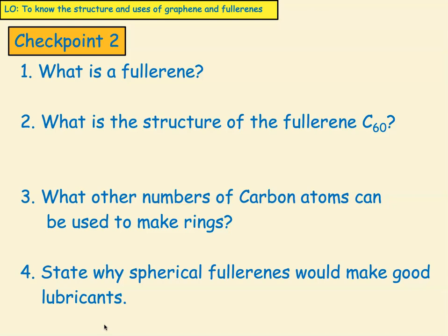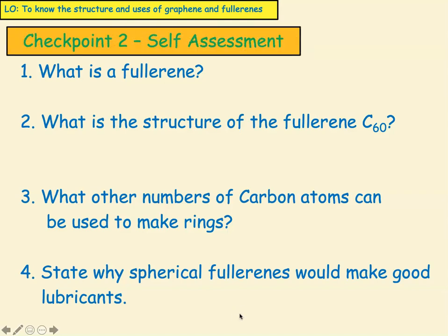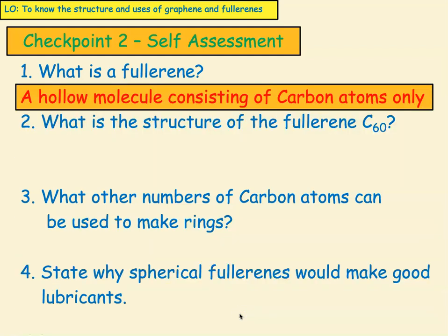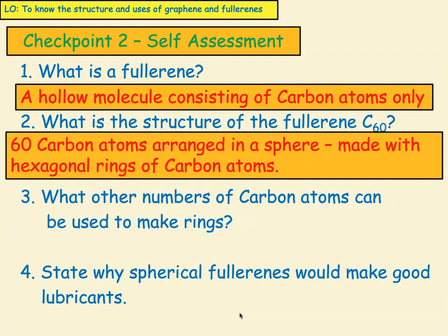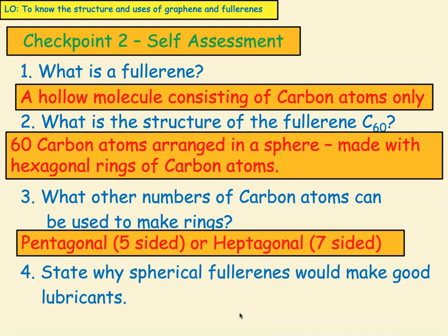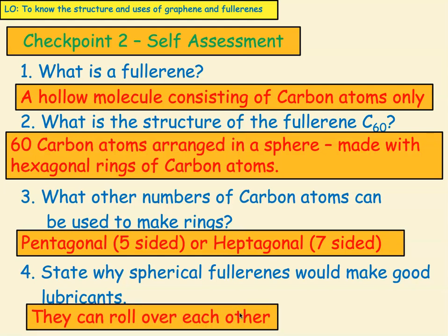Let's have a look at our second checkpoint. Pause the video now and answer the questions, then come back. Let's self-assess. What is a fullerene? A fullerene is a hollow molecule consisting of carbon atoms only. What is the structure of the fullerene C60? That is 60 carbon atoms arranged in a sphere like a ball, made with hexagonal rings of carbon atoms. What other numbers of carbon atoms can be used to make rings? We can use pentagons — five-sided — or heptagons — seven-sided. Why would spherical fullerenes make good lubricants? They make good lubricants because they can roll over each other.